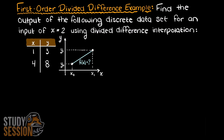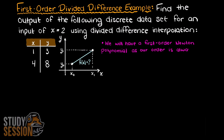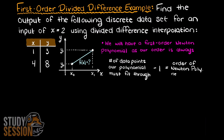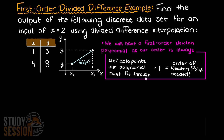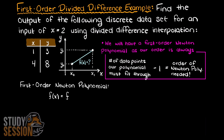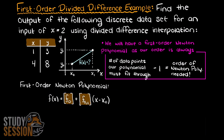As we learned before, interpolating polynomials must always pass through every data point supplied to them. Therefore, our Newton polynomial will always be order of n minus 1. Therefore, in this problem we are being asked to solve for a first order divided difference. A first order Newton's polynomial has the following general equation, and we are only missing these coefficients — these are called our divided differences, hence the name.